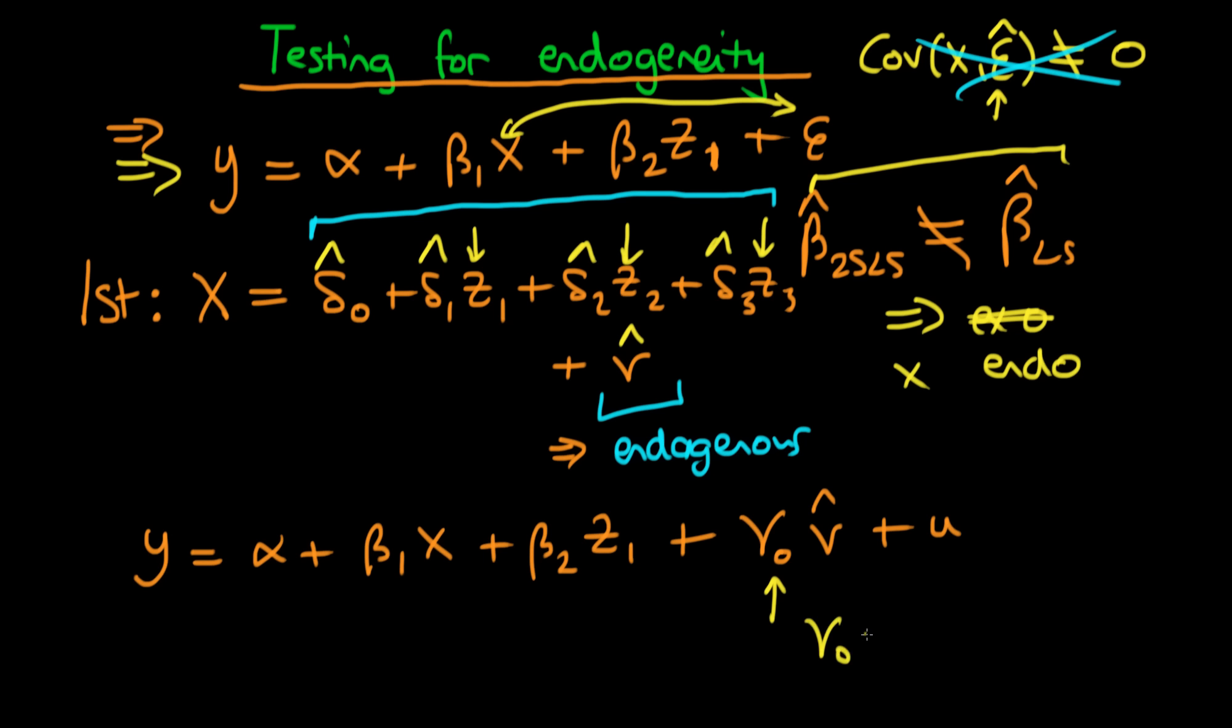And then what we do in the situation where we have a single explanatory endogenous variable is that we then test for significance of gamma 0. Because if gamma 0 is statistically different from 0, so we conclude that gamma 0 is greater than 0, then that is suggestive of some part of x, which we call v or v hat, is actually endogenous.